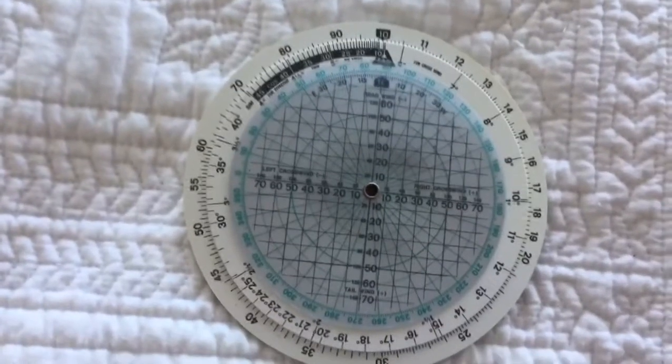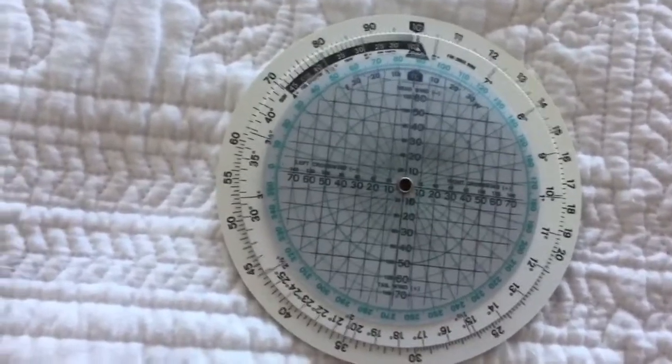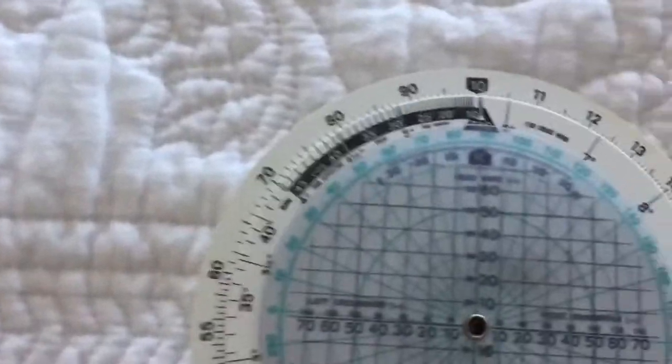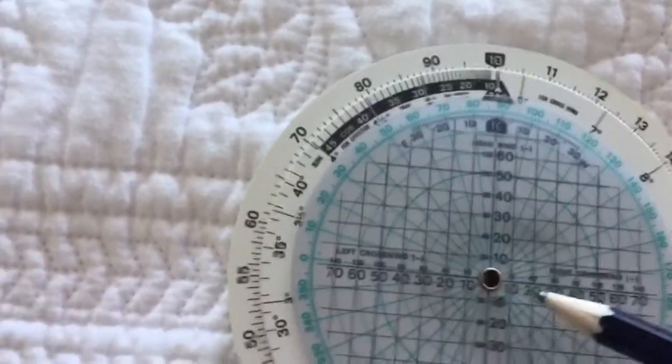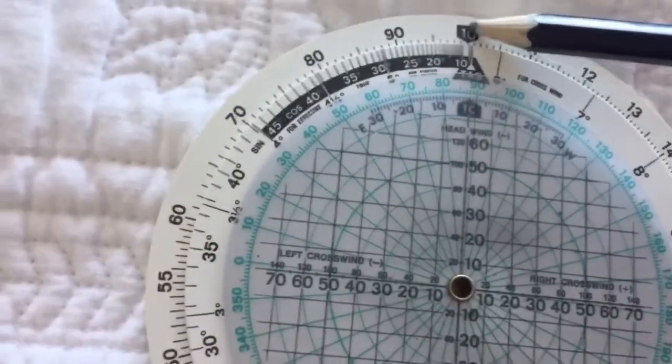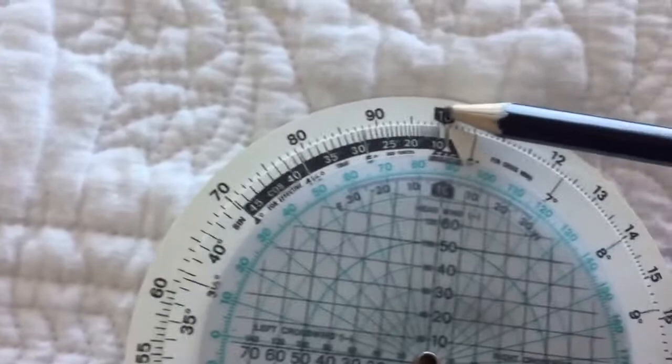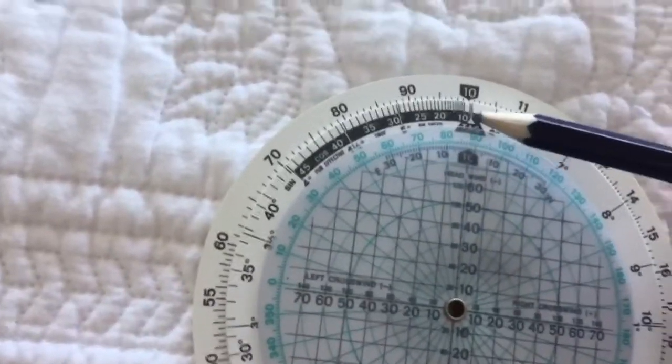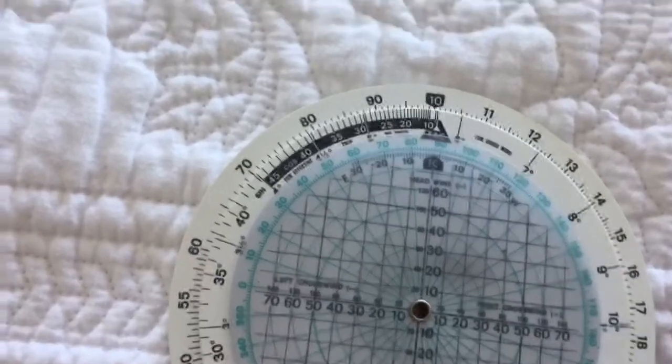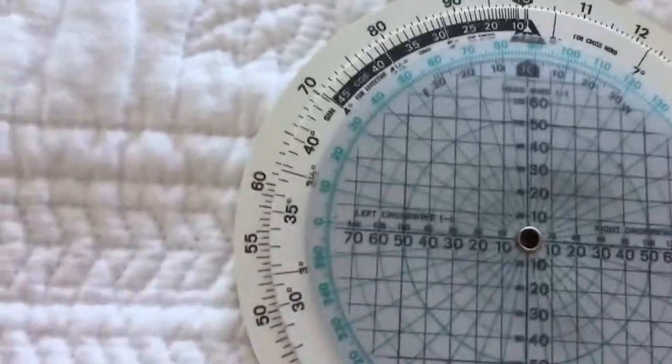This is how to use the Jefferson wind calculator, or CR side of the calculator. First, we use the green scale for our winds and wind speeds. The outer scale is our true airspeed, and the scale here in the middle is our degree of drift or correction factor.